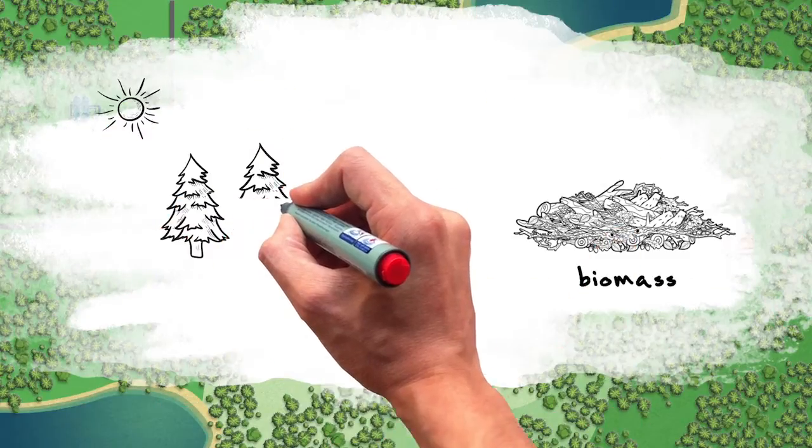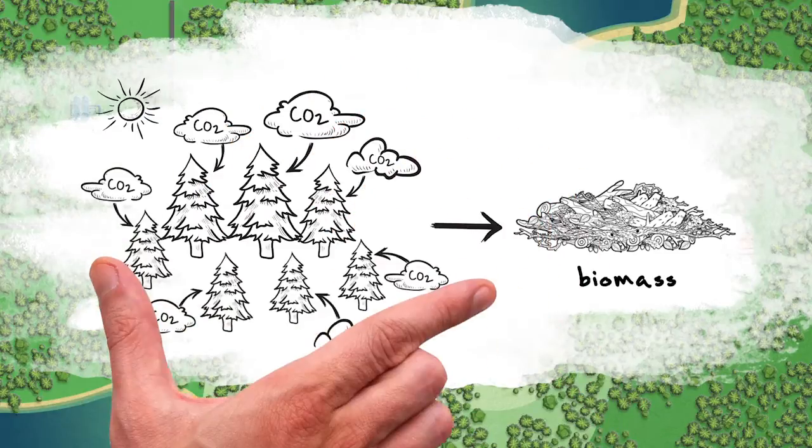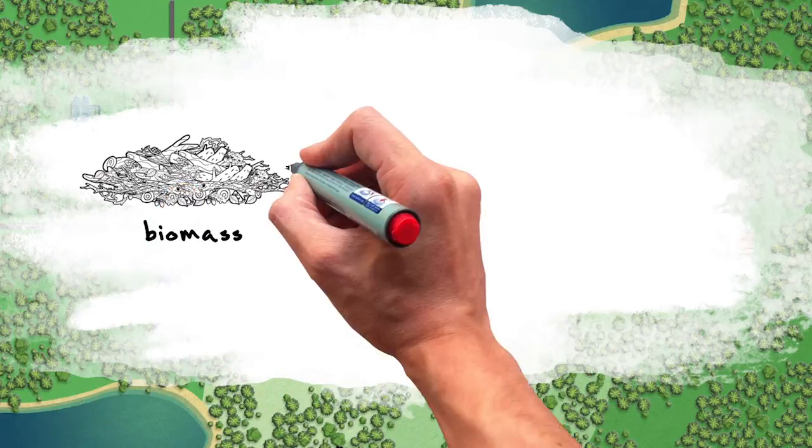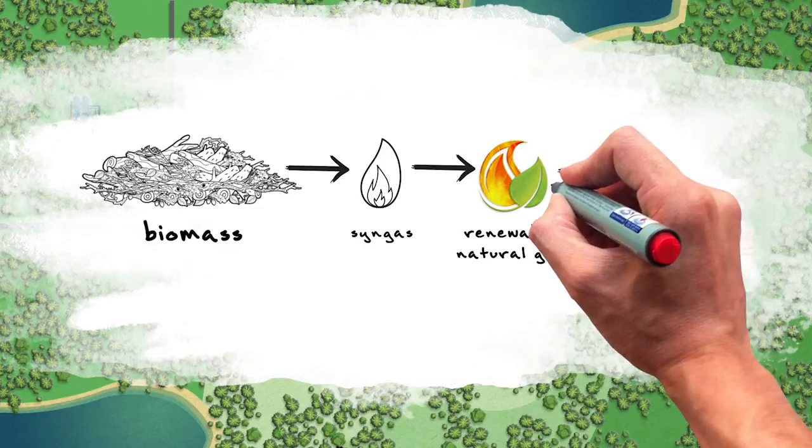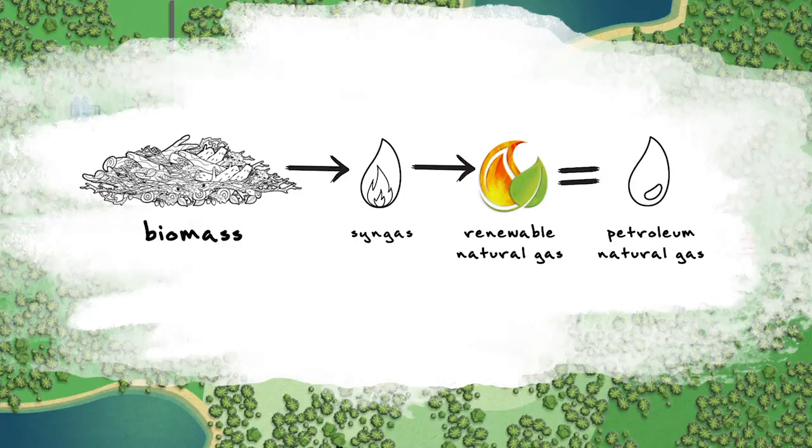Biomass is harvested from forests that have already absorbed CO2 and are sustainably managed to absorb future greenhouse gases. Forest biomass is gasified into syngas, which is further treated to produce renewable natural gas, a final product indistinguishable from petroleum-based natural gas.